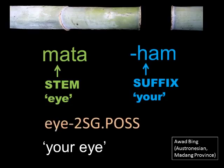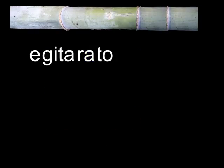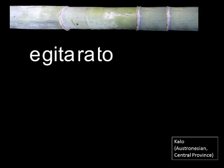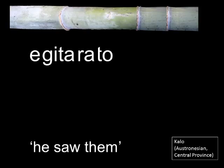Linguists write the meaning of this suffix with a hyphen and the capital letters 2SG.POS to show that this is a grammatical meaning — showing the eye is owned, or possessed, by you, the second person singular. Now, look at a more complicated example from the Kalo language, an Austronesian language from Central Province. If we translate the one word 'egitarato' into English, we would say 'he saw them'. We need three words in English because there are many morphemes inside this one Kalo word, which cannot all be expressed in one English word.